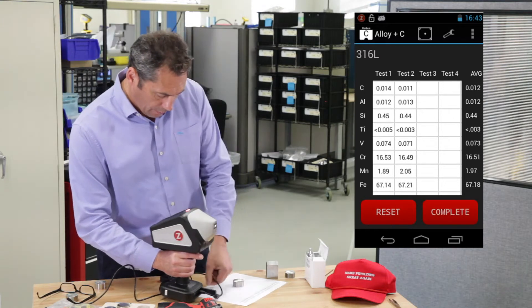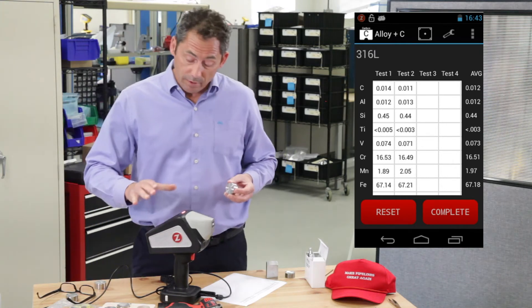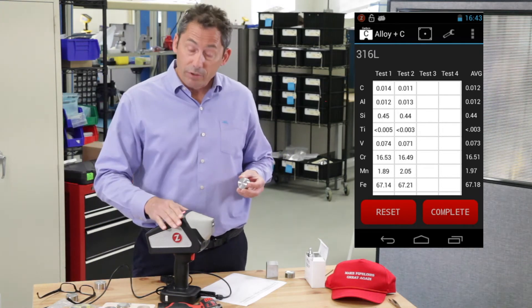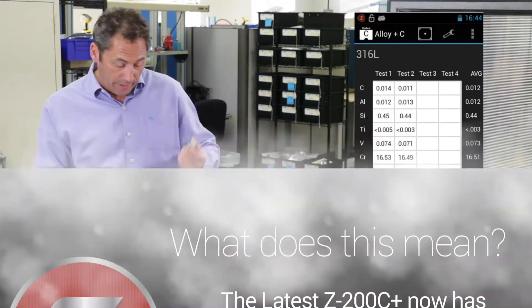Okay, so this is what I want to make a point about with some of the updates to the analyzer. Carbon signal's higher, precision is better. This is an 016 L-grade.